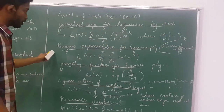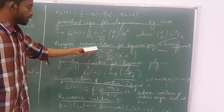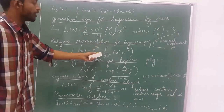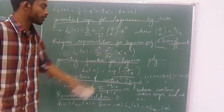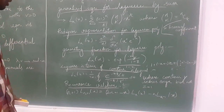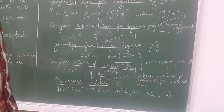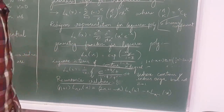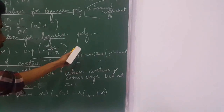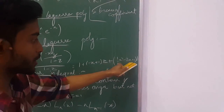Rodrigues' representation for Laguerre polynomials is: e^x / n! × the nth derivative of (x^n × e^(-x)) with respect to x. The generating function for Laguerre polynomials is exp(-x·z / (1-z)) / (1-z), which expands as 1 + (-x+1)z + (1/2)(x² - 2x + 1)z² and so on.